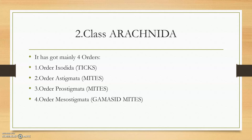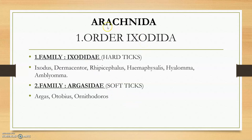Class Insecta is now clear. Moving to class Arachnida, which has 4 orders. Order Ixodida comprises ticks. Orders Astigmata, Prostigmata, and Mesostigmata comprise the mites. In order Ixodida we have two families: family Ixodidae (hard ticks) and family Argasidae (soft ticks). Genera in Ixodidae include Ixodes, Dermacentor, Rhipicephalus, Haemaphysalis, Hyalomma, and Amblyomma. Genera in Argasidae include Argas and Ornithodoros.